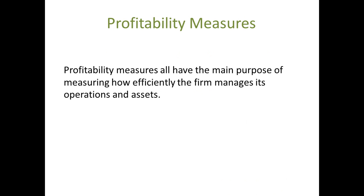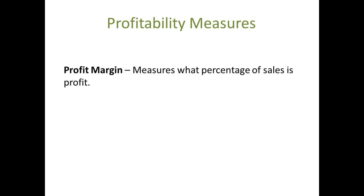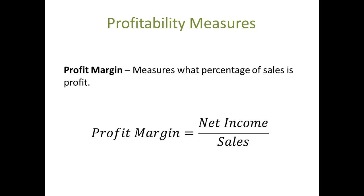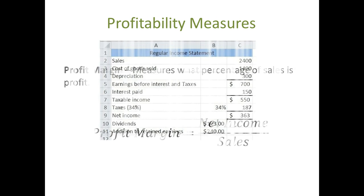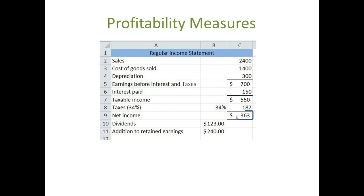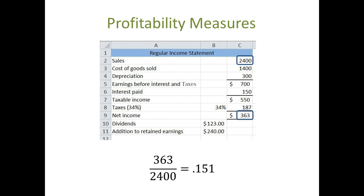The Profit Margin. Profit margin equals net income divided by sales. Our net income was $343,000 and our total sales were $2.4 million. This says that our company generated $0.15 for every dollar in sales.